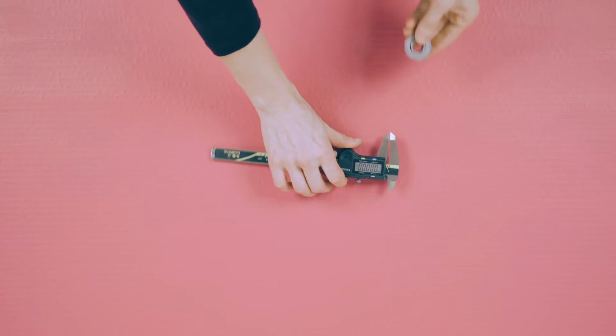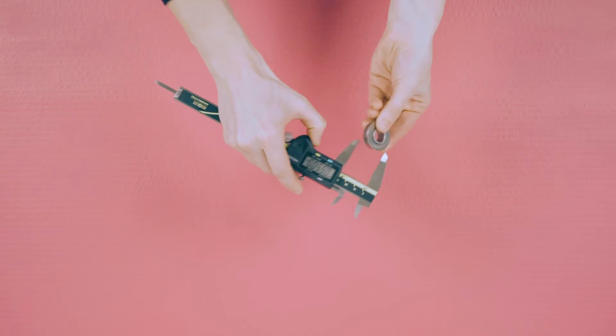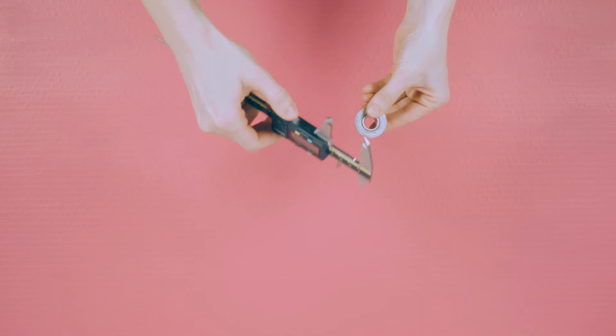The long jaws are designed to measure outside dimensions like thickness and diameter. The smaller upper jaws are for measuring inside dimensions like the diameter of the hole in this bearing.